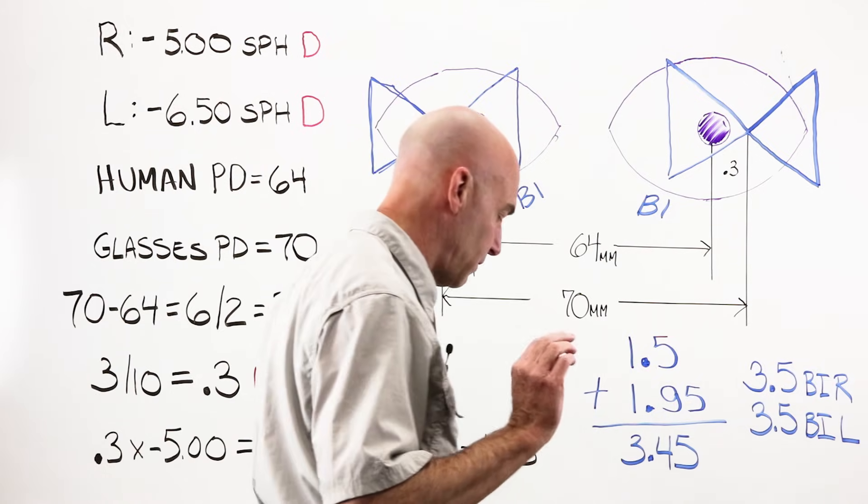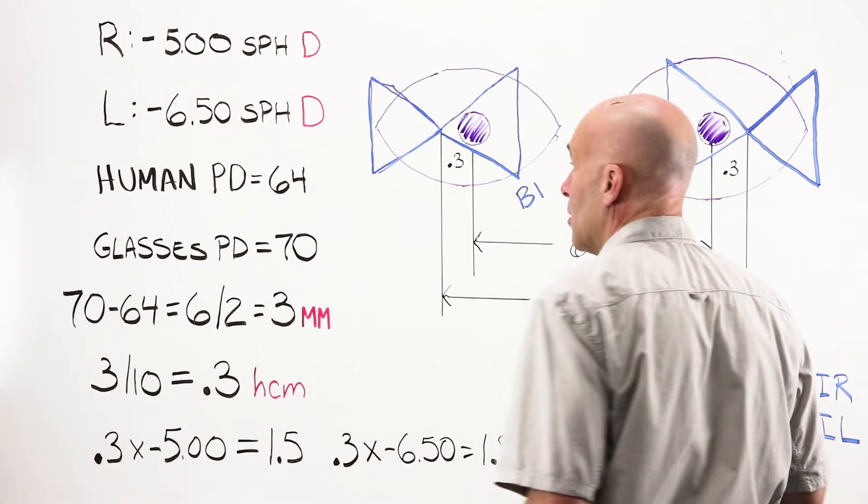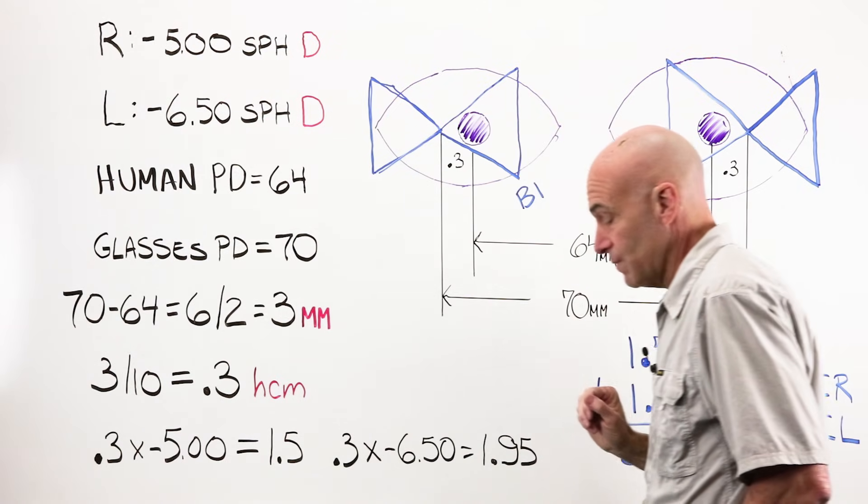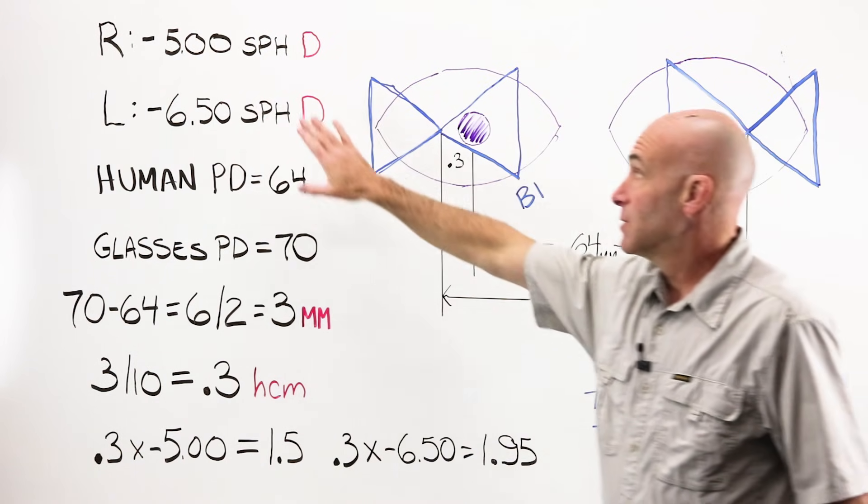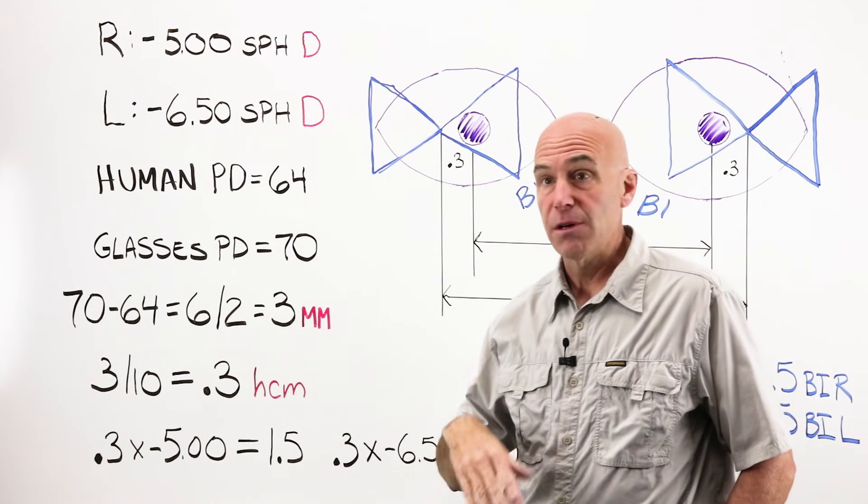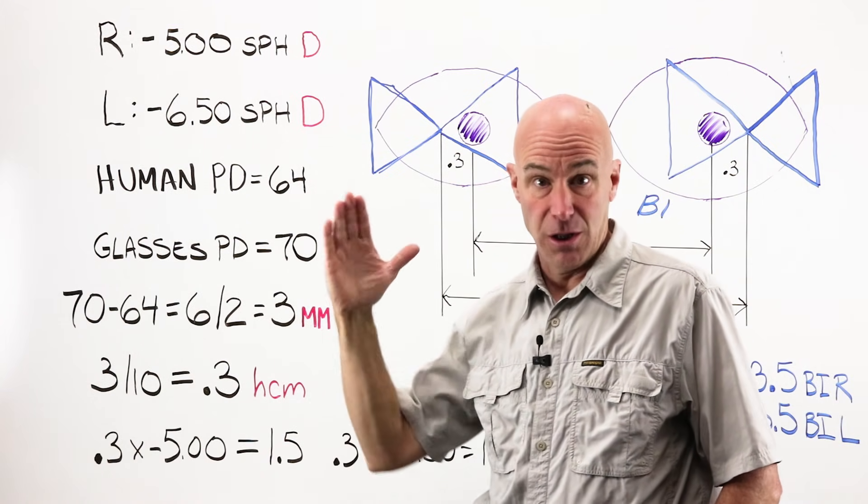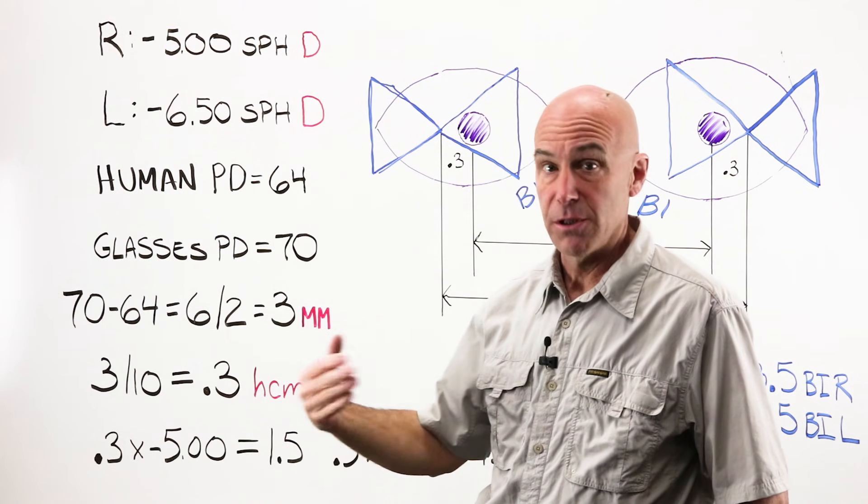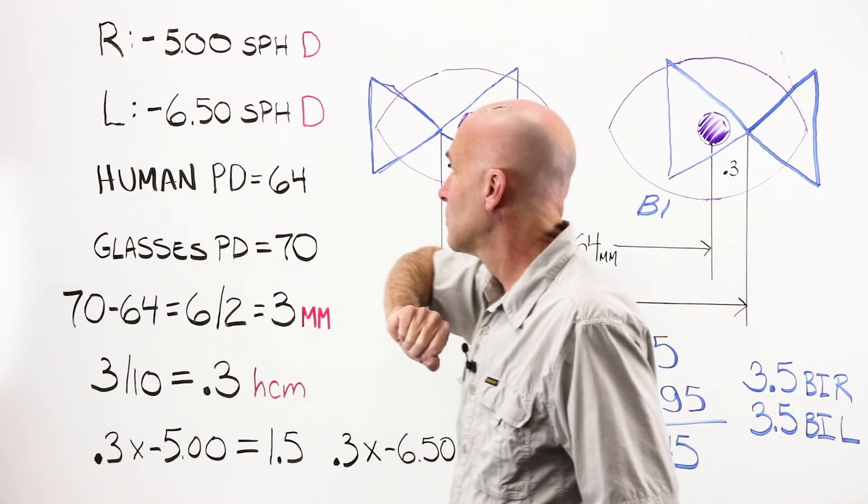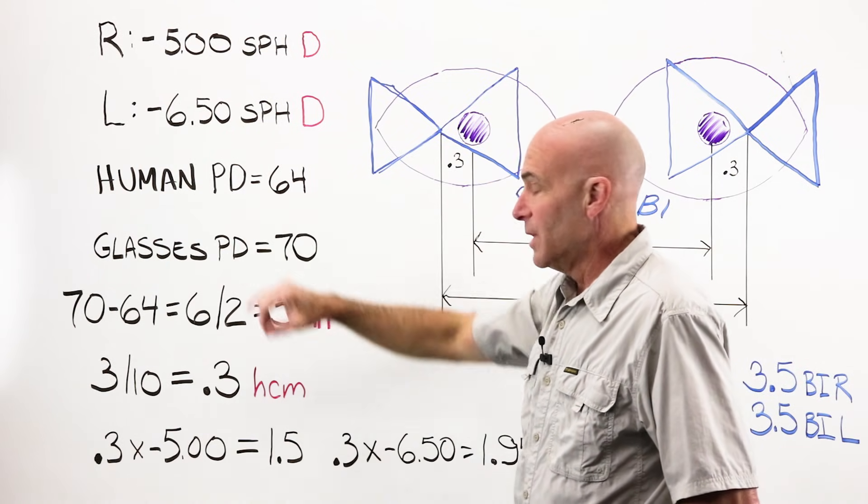Let's look at a very basic problem. I have a minus 5 sphere on my right, and a minus 6.50 sphere on my left. Because it is a sphere, the power is the same over the entire surface of the lens. I don't have to worry about position. We don't have to worry about 30, 45. We don't have to do flat transposition. Everything is right there.